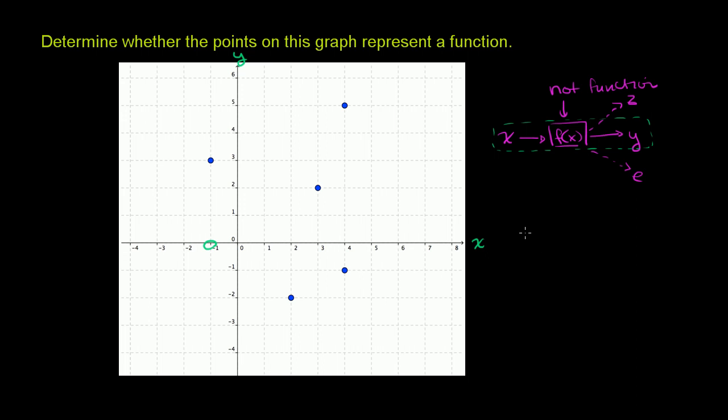So one way to write that mapping is you could say when you input negative 1 into our function, I'll put a little f box right over there, you will get the number 3. This is our x and this is our y. So that seems reasonable. Negative 1, very clear that you get to 3.